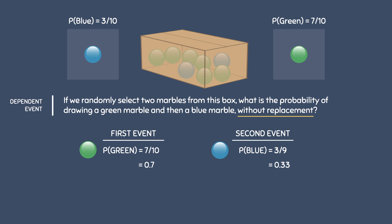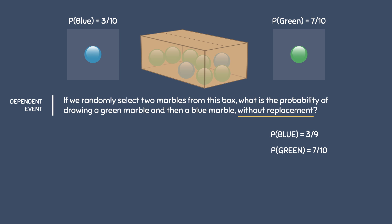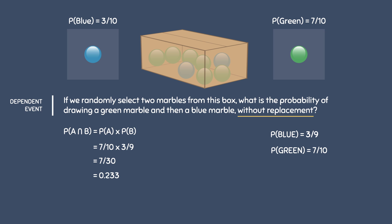As a result, this is a dependent event because the occurrence of the first event affected the probability of the second event. To finish this problem, all we have to do is multiply these two values together. 7 over 10 times 3 over 9 gives us an answer of 7 over 30, or 0.233.